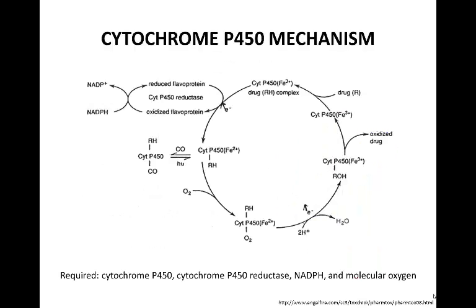Cytochrome P450 contains an iron atom that alternates between the ferrous and the ferric states, and acts like a terminal oxidase. The oxidation process requires four compounds: cytochrome P450, cytochrome P450 reductase, NADPH, and molecular oxygen. An oxidized form of cytochrome P450 forms a binary complex with the drug substrate, to which NADPH donates an electron to the cytochrome P450 reductase to reduce the newly formed drug complex. Then a second electron is donated to the drug substrate complex once again from NADPH via the cytochrome P450 reductase, and ends up reducing the molecular oxygen, which then forms an activated oxygen–cytochrome P450–drug substrate complex. The activated oxygen is then transferred directly onto the drug substrate of the complex, thereby forming an oxidized product to move onto the next stage.